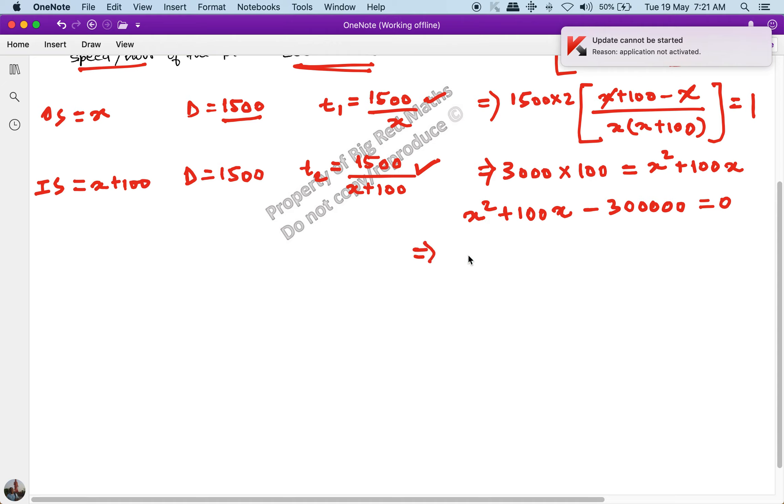Now see, solving this quadratic equation is very easy. It breaks into 600 and 500. So I can write this equation as x squared plus 600x minus 500x minus 600 into 500 equals 0. And now factorizing this, x into x plus 600 minus 500 into x plus 600 equals 0.